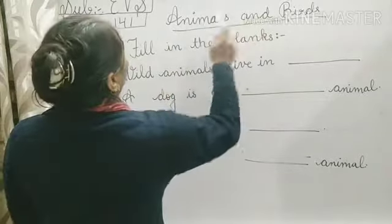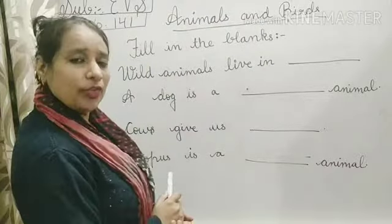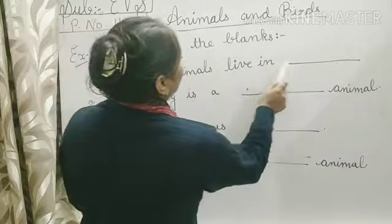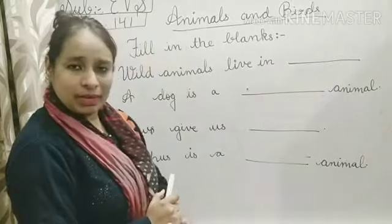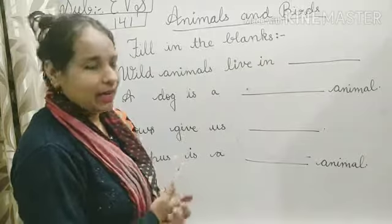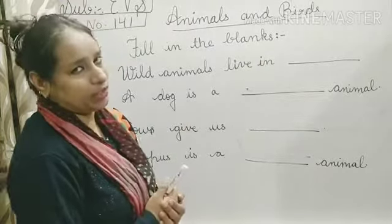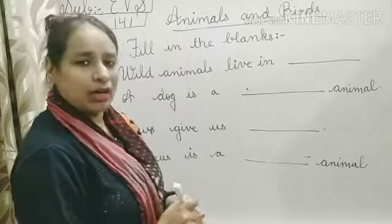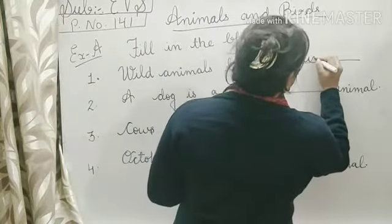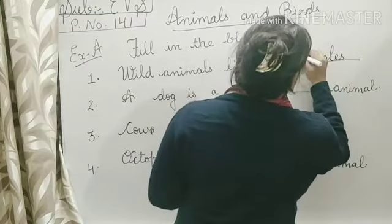Chapter number 3: Animals and Birds. Fill in the blanks. Question one: Wild animals live in DASH. Wild animals live in jungles — J-U-N-G-L-E-S. Jungles. Clear?